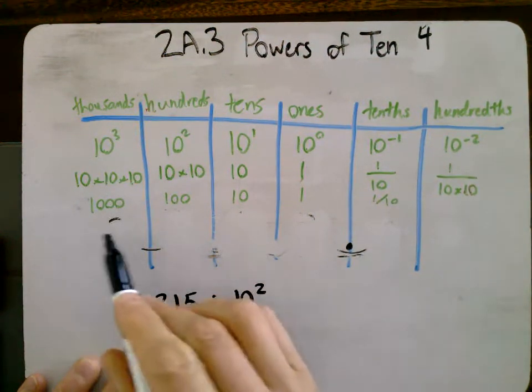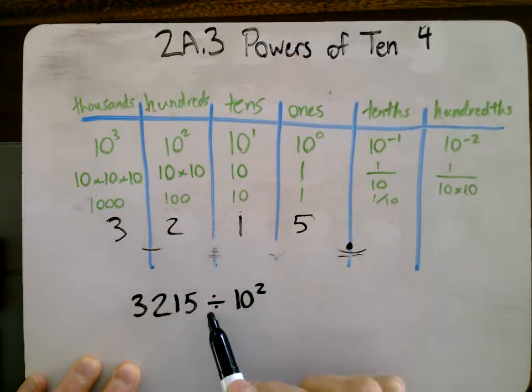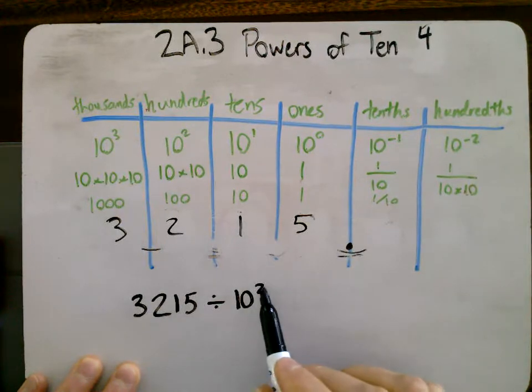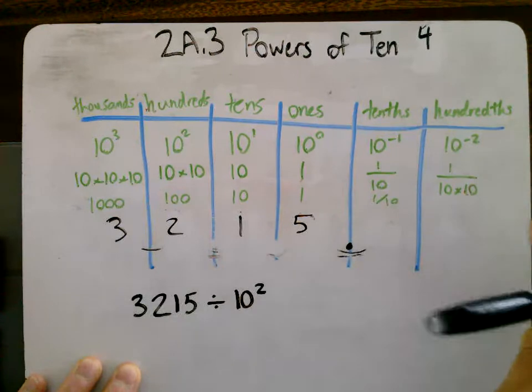So if I were to put this on my place value chart, I'd have 3, 2, 1, 5. And remember, we're dividing by 10 to a positive power, so that means we're going to shift this way to the right.